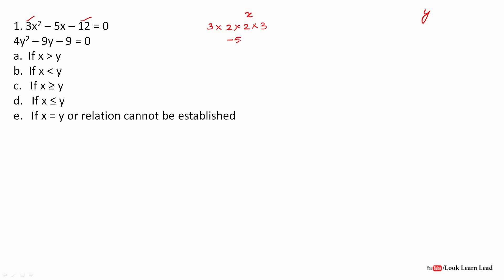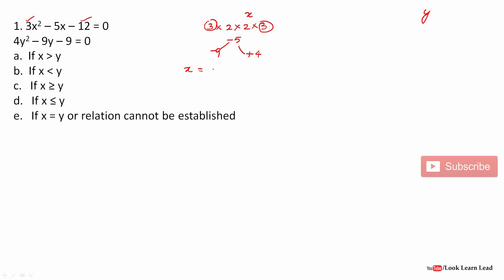I check combinations: 6 and 6 gives 0. Then 3×3 = 9 and 4 gives 5. To get -5, I take -9 and +4. Now for the value of x: if the sign is minus I take plus, and if plus I take minus. The coefficient of x² is 3, so I divide by 3. That gives 9/3 = 3 and -4/3 = -1.3. So the values of x are 3 and -1.3.